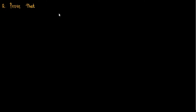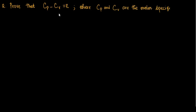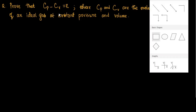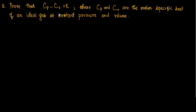Prove that Cp minus Cv equals R, where Cp and Cv are the molar specific heat of an ideal gas at constant pressure and volume.